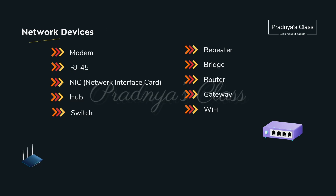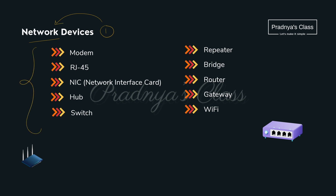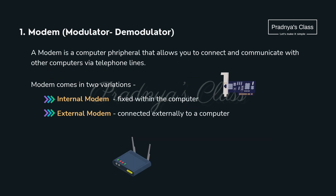The first important topic we are going to discuss is network devices. You can see here the list of network devices. Out of that we will be concentrating on modem, hub, and switch, but we will be going through other devices also but in short. The first network device is modem.